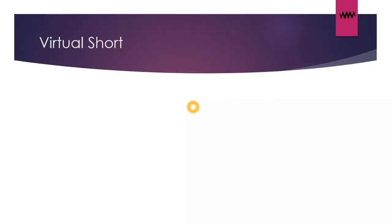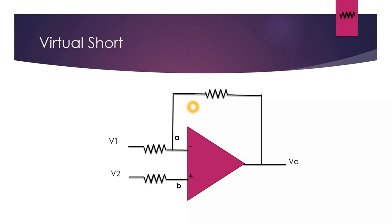Now let us observe the concept of the virtual short. Have a look at this diagram. What we have done is we have provided V1 and V2 as two voltages at the non-inverting and the inverting terminals. So as we saw in the earlier slide, that the inverting terminal will follow the voltage of the non-inverting terminal. That is VA will be equal to VB, and as a result these two will appear to be shorted.